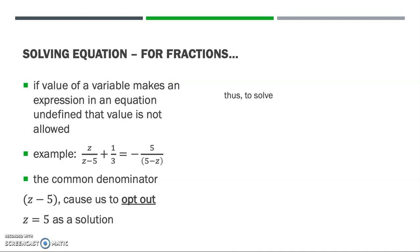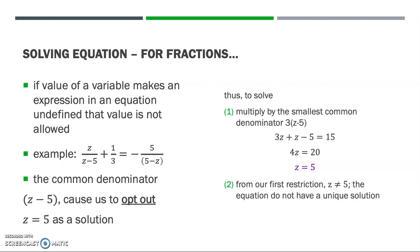So to solve the equation from our example, first, we do multiplication by the same number on both sides. We use the smallest common denominator, which is 3(z - 5). And this is the result. And we simplify it. We get 4z = 20. And this is the result from the process of solving the equation. But from our first restriction, z may not be equal to 5. Thus, we can conclude that this equation does not have a unique solution.